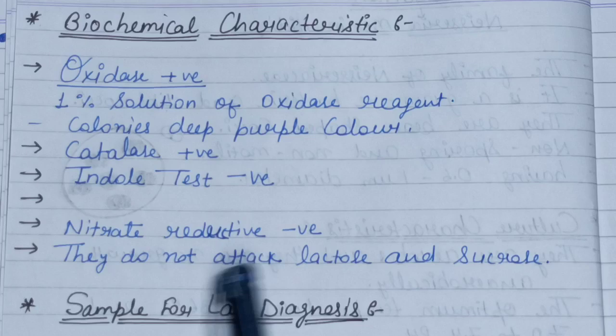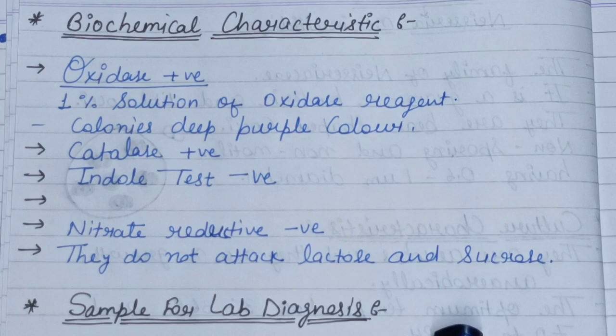For lab diagnosis, the specimen we take is CSF and blood, because Neisseria meningitidis basically attacks the CSF and is also found in the blood.